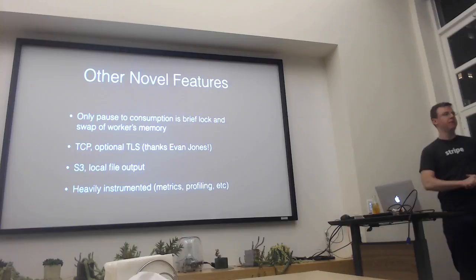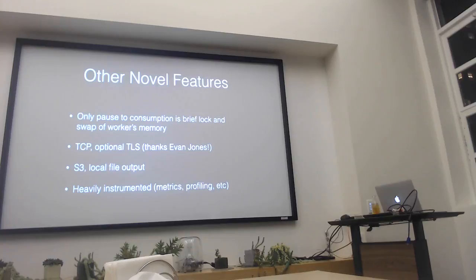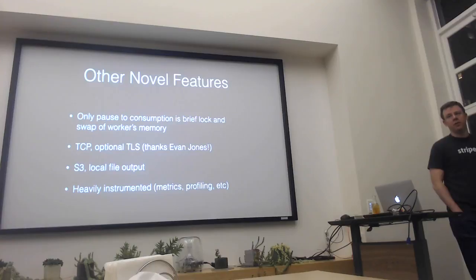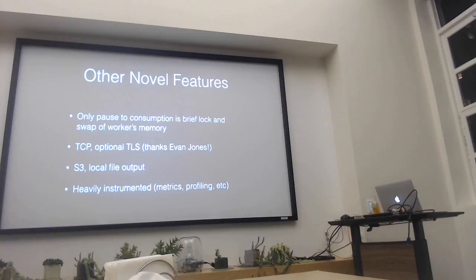The benefit to StatsD generally is that it's very fire and forget, but it's also fire and might not make it there. So for some people that's not appropriate — they'd prefer to use TCP, and furthermore they might even want TLS so they can end-to-end encrypt their metrics. We do not use this, but thanks to Evan Jones and Bluecore for contributing that. We also have features that let you dump everything to S3. We did it for a while with the intent of loading it into Redshift. You can also tee all your metrics out to just the local file on disk, which is pretty fun for interesting side projects.